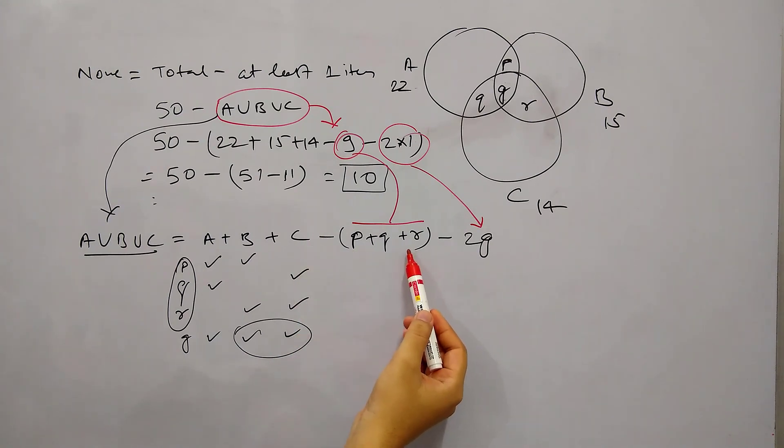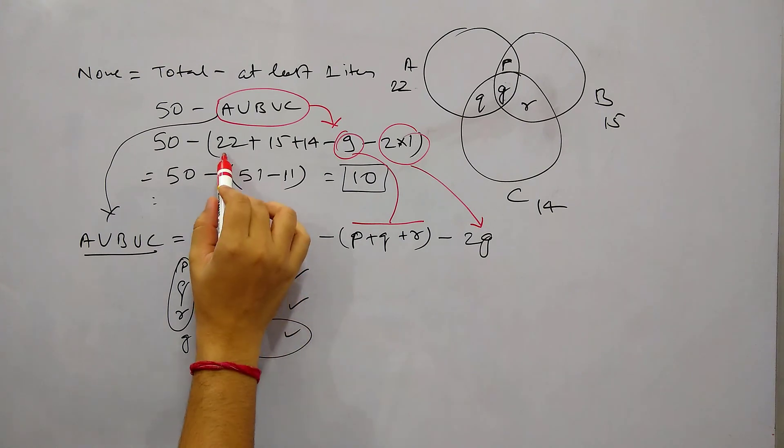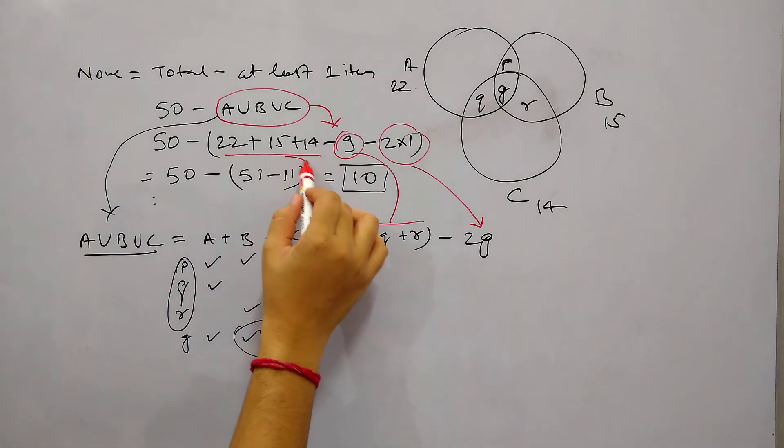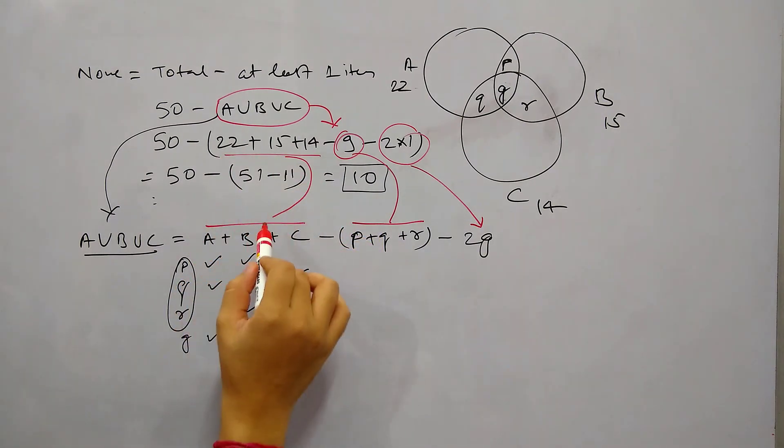So P plus Q plus R is the sum of those people who own exactly 2 items. This is also clear in the diagram. So this 9 came from here and this 22 plus 15 plus 14 came from here. So I hope this would be clear now.